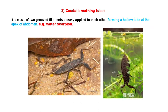Caudal breathing tube: it is generally found in the water scorpion. In the water scorpion, two grooved filaments are closely applied to each other, forming a hollow tube-like structure at the apex of the abdomen — that is the caudal breathing tube.